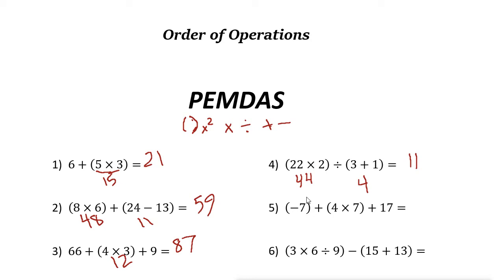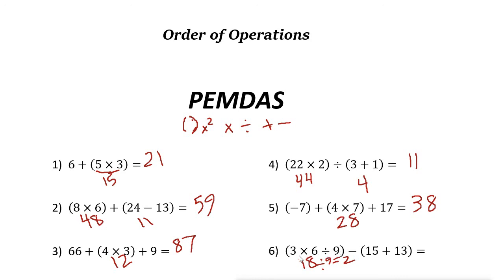Next, we have a negative number inside parentheses — there is no operation inside this set of parentheses, so it just represents a negative number. Then four times seven is twenty-eight. We get negative seven plus twenty-eight which is twenty-one, plus seventeen is thirty-eight. For the last example, we have two operations — multiplication and division — inside the parentheses. We can solve in either order. Three times six is eighteen, then eighteen divided by nine is two. Alternatively, six divided by nine is two-thirds, and three times two-thirds is two. Inside the other parentheses, fifteen plus thirteen is twenty-eight. So two minus twenty-eight equals negative twenty-six.